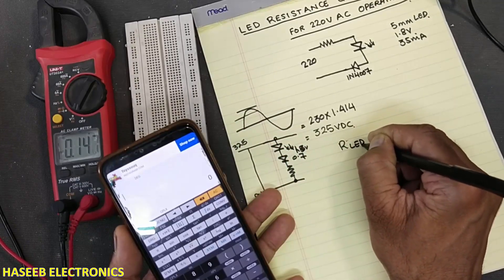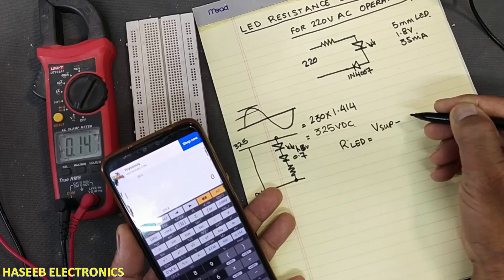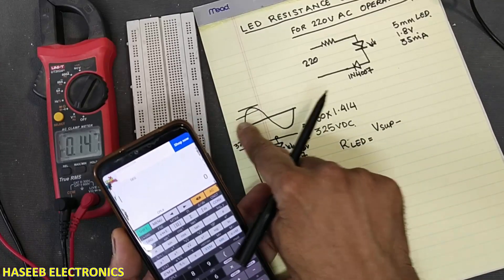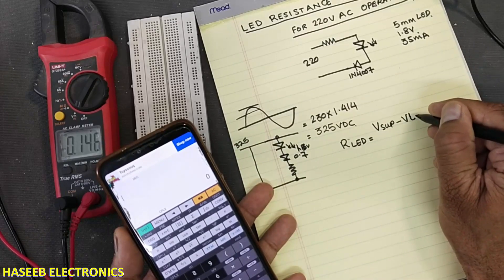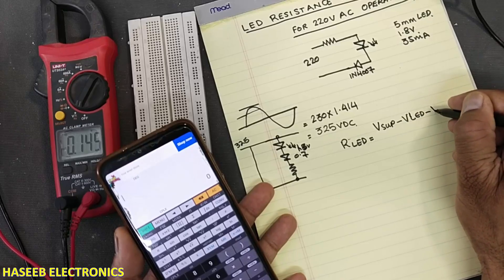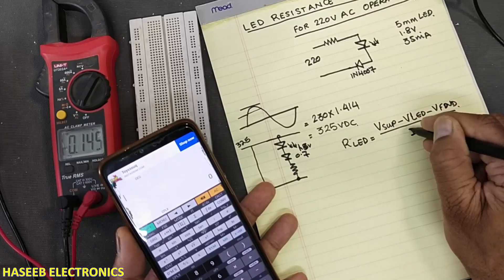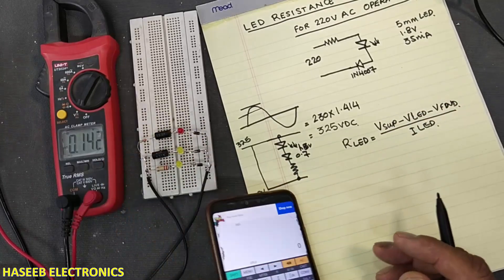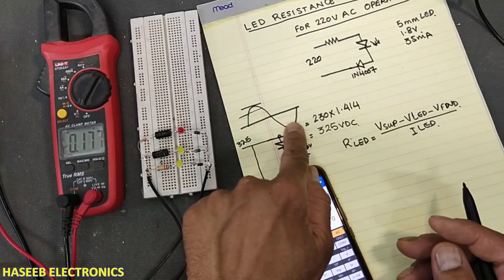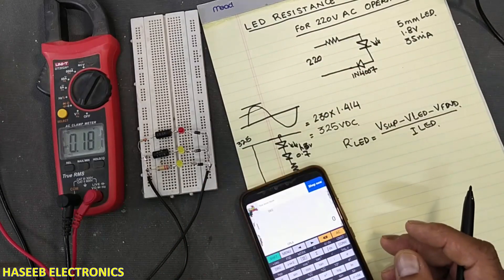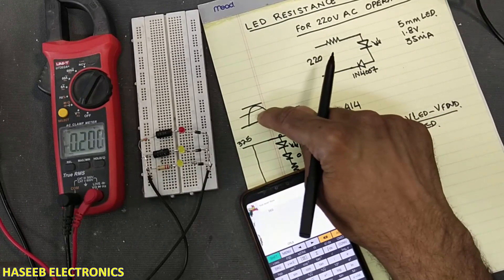RLED, LED resistance is equal to V supply, V peak. Now we will not use RMS voltage, we will use peak voltage. V supply minus V LED minus V forward for the diode divided with I LED. Now another thing: this diode will clip the negative peak. In negative peak this diode will become reverse bias so that the LED will work just only in this peak, positive peak.